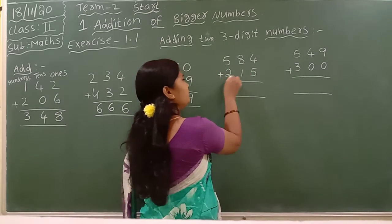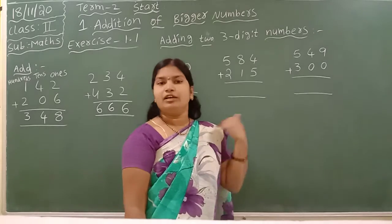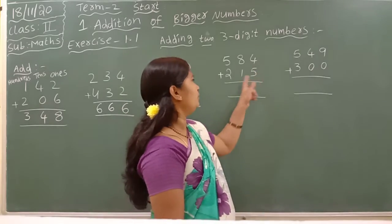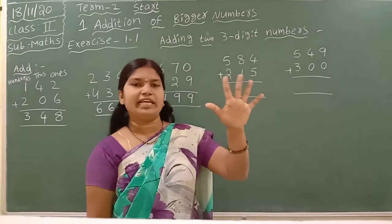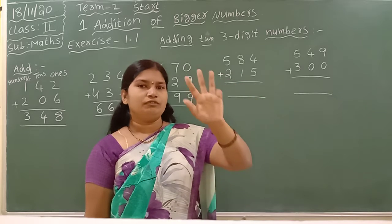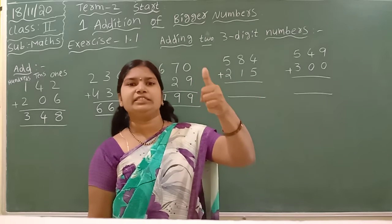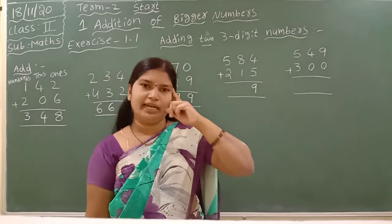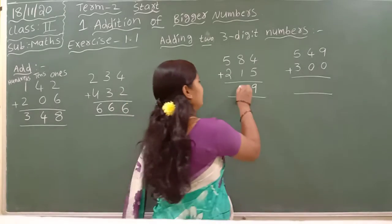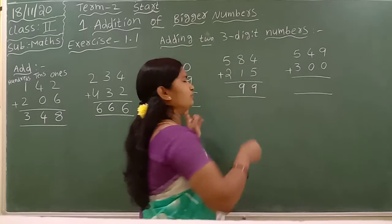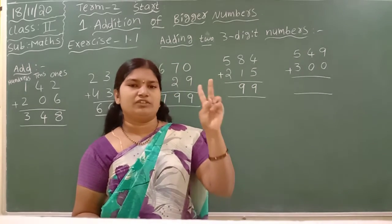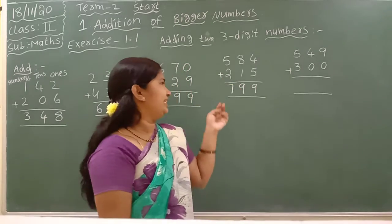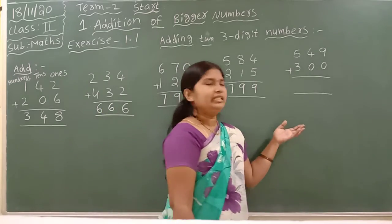Next: 584 plus 215. First which place do we add, children? We add the 1s place first. 4 plus 5 — 4 in the mind, take 5 fingers: 4, then 5, 6, 7, 8, 9. Next: 8 plus 1 — 8 in the mind, take 1 finger: 8, then 9. Next: 5 plus 2 — 5 in the mind, take 2 fingers: 5, then 6, 7. The answer is 799.